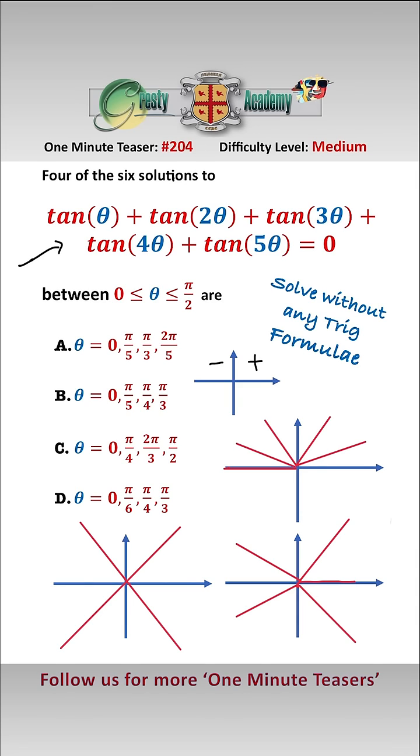All we need to do is remember that tangent in these four quadrants is plus, minus, plus, minus — and then mirrors cancel each other out.